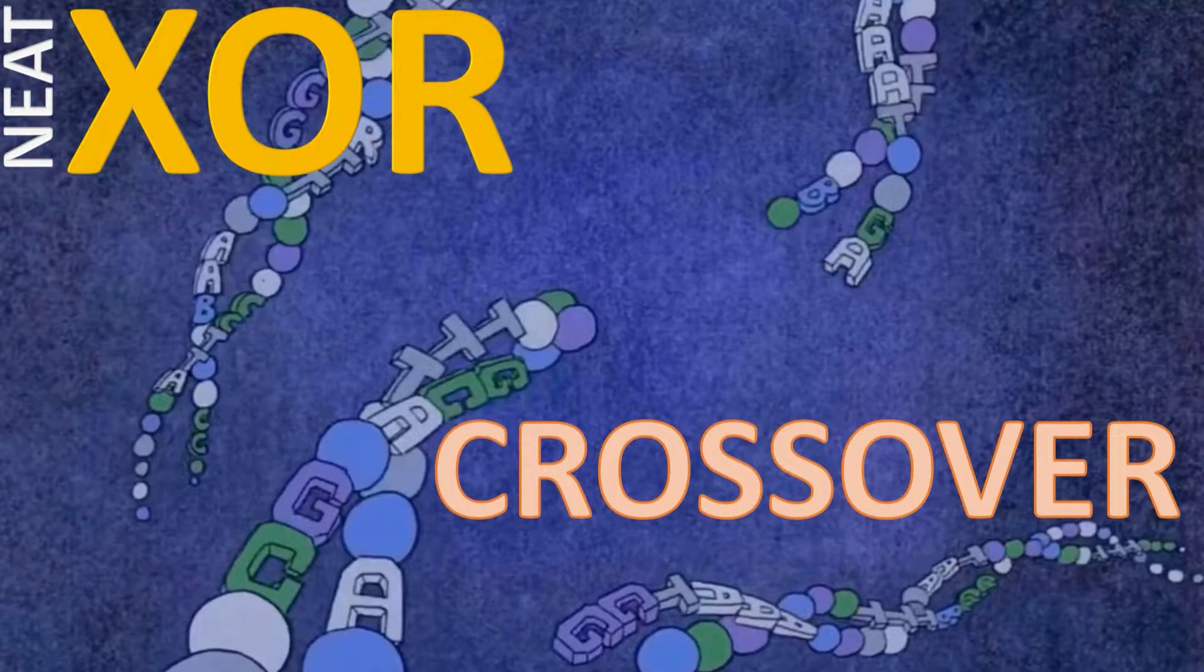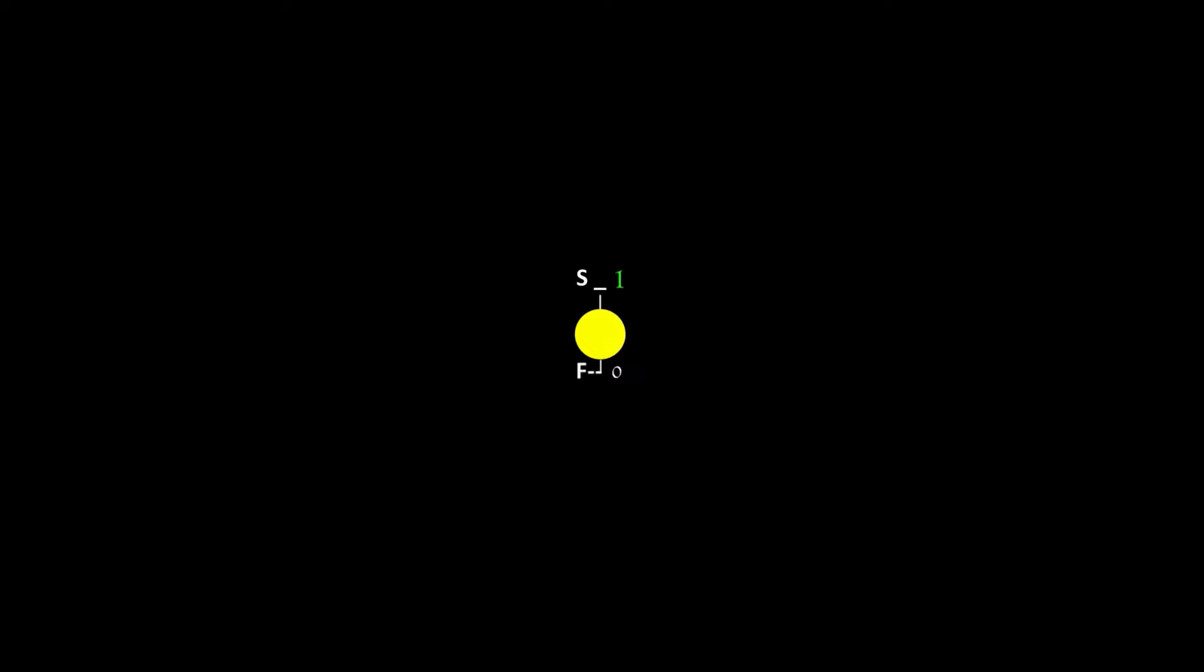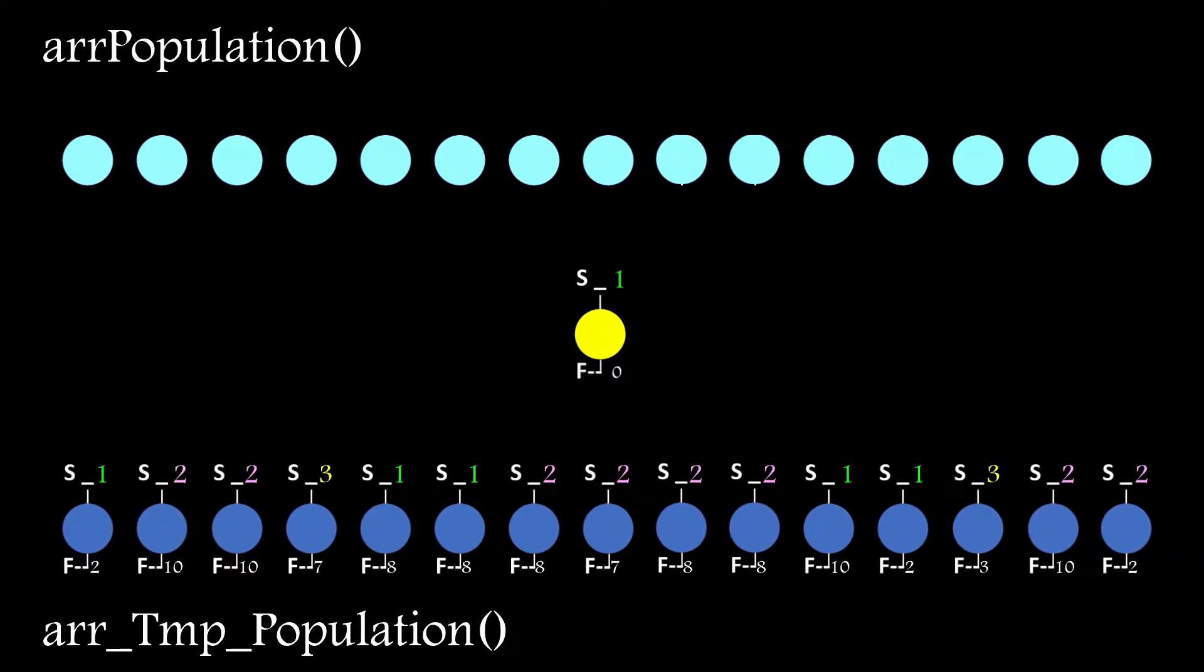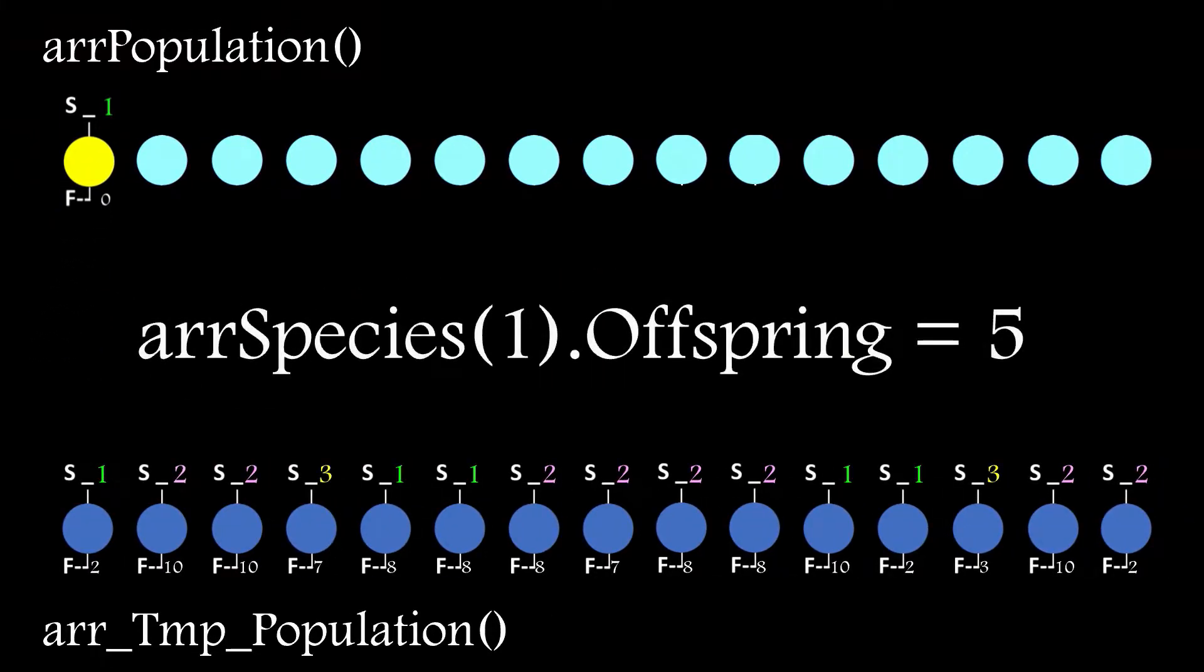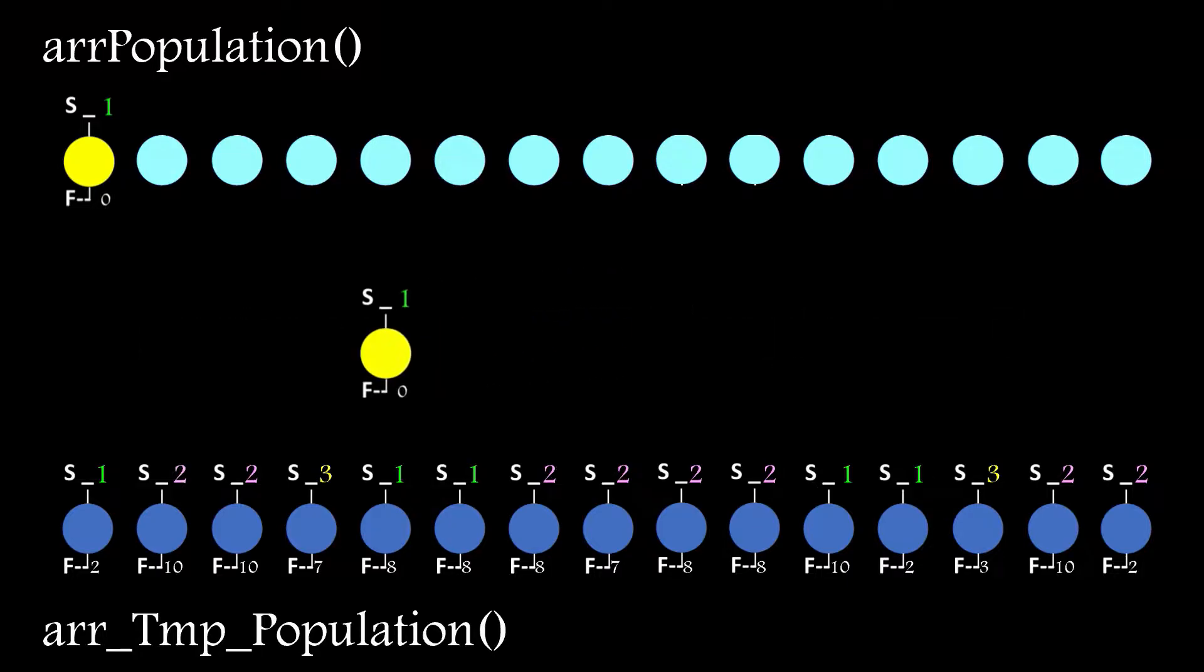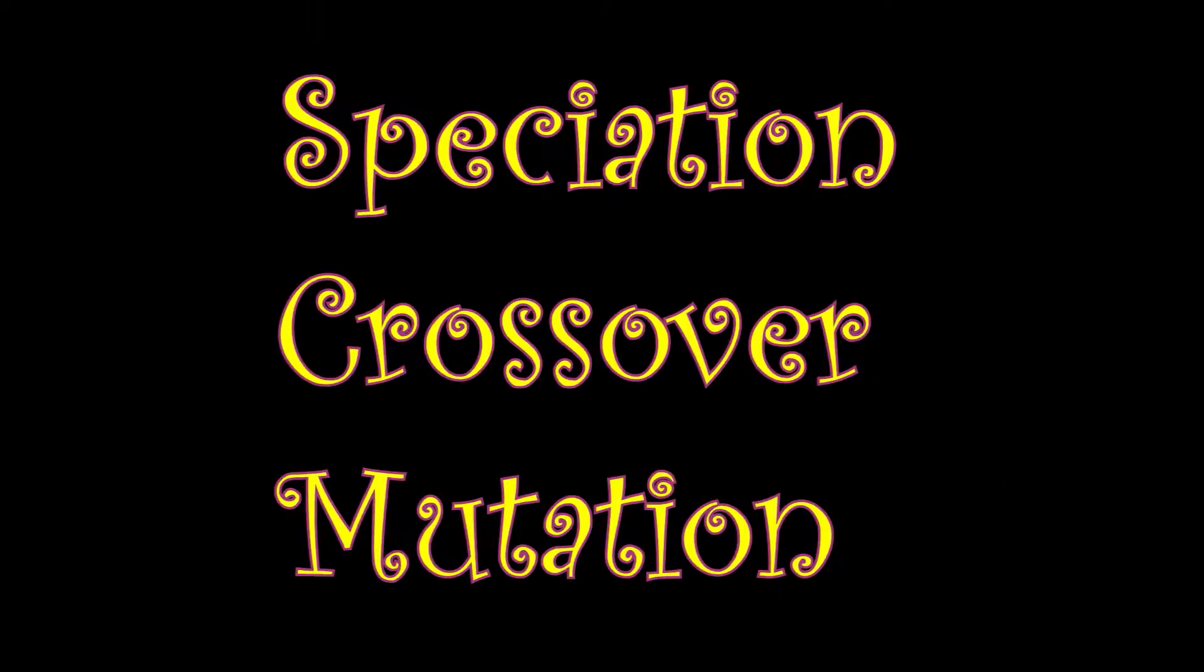Crossover was next, which is the process that actually produces the offspring by selecting parents based on their comparative fitness from within a species, and mixing connection weights randomly from both parents for connections that they both share. So of those three main areas, we've dealt with two of them.